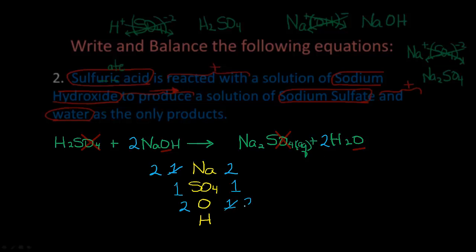Now balance hydrogens: from H₂SO₄ we have two hydrogens, and from 2 NaOH we have two hydrogens — four total on the reactant side. On the product side, 2 H₂O gives us two times two equals four hydrogens. We have four hydrogens on each side, so we are balanced. This is the balanced equation.